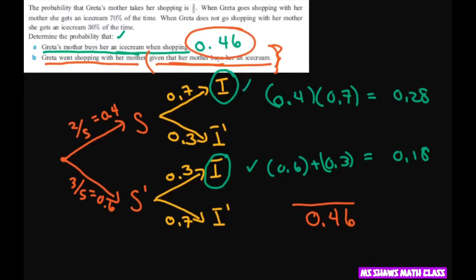For the numerator we want to know when she goes shopping. The going shopping with the ice cream is going to be 0.4 times 0.7.